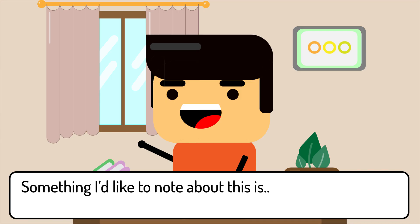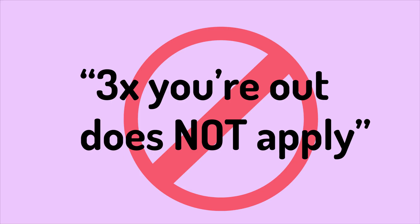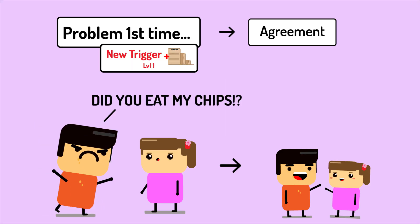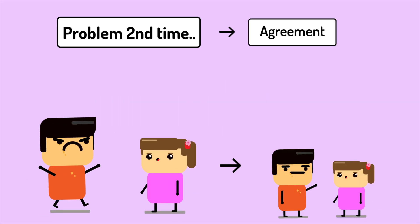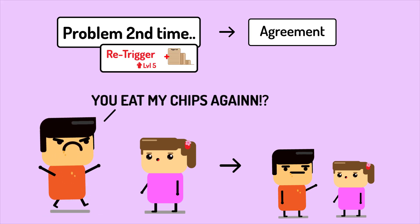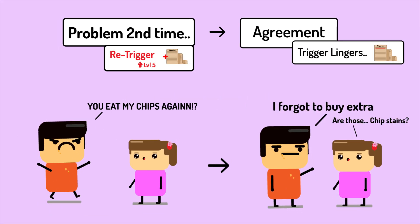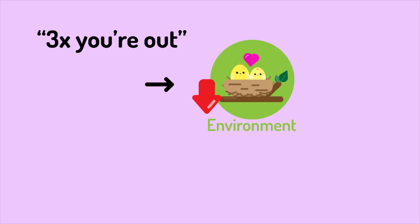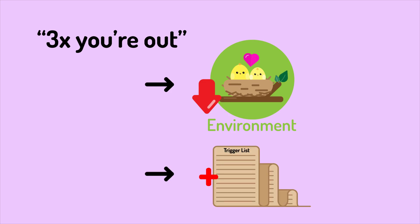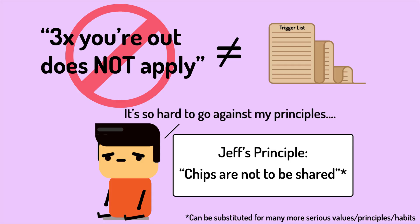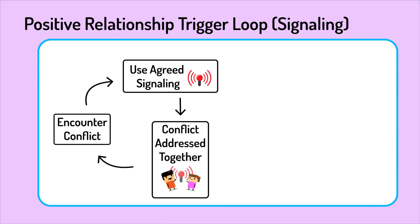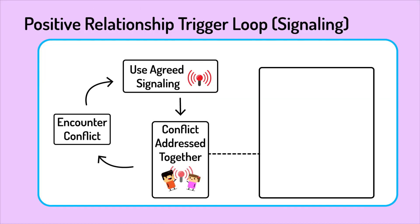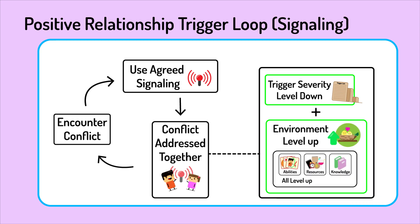Because you both agree to work on it together, when the situation arises again — bam, signal unleashed, problem addressed. Signals could also be small gestures or icons sent through a messaging app — anything that can serve as a safe, subtle reminder. Something important to note: "three times you're out" does not apply. More often than not, when we first encounter a problem, we think it's settled right after it's discussed. The second time the same topic resurfaces, triggers are more heavily impacted. By the third time, we're done — which is a very bad approach. Remember, everything is a slow change. Through revisiting signals time and time again with the right methods, triggers will level down and the environment improves.